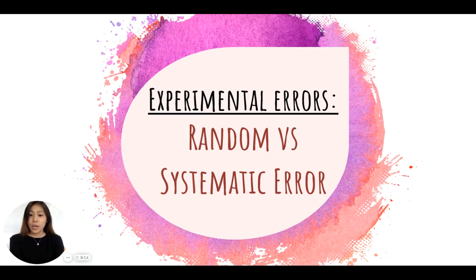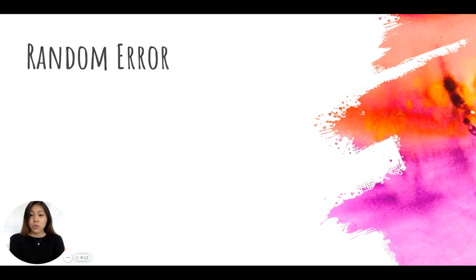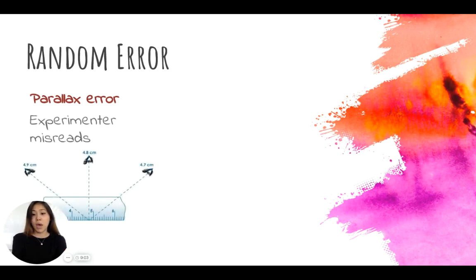Let's take a look at random error first. Random error, a few examples starting with parallax error, is when an experimenter misreads. So this is something like using a pipette or using a ruler and not really looking at it at the most direct angle, and so you're misreading the value by a couple decimals.